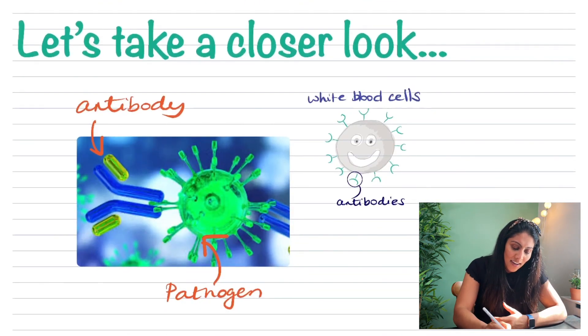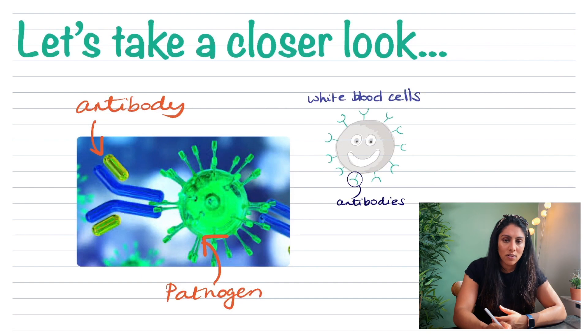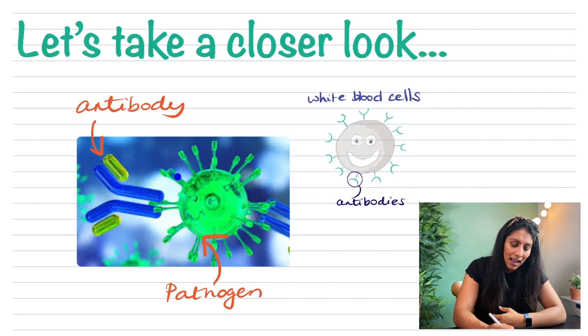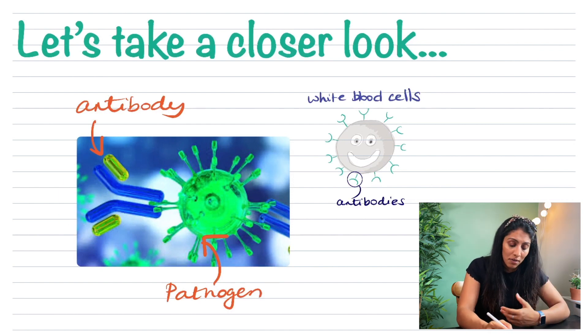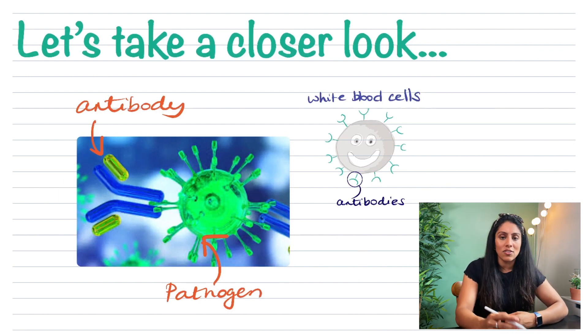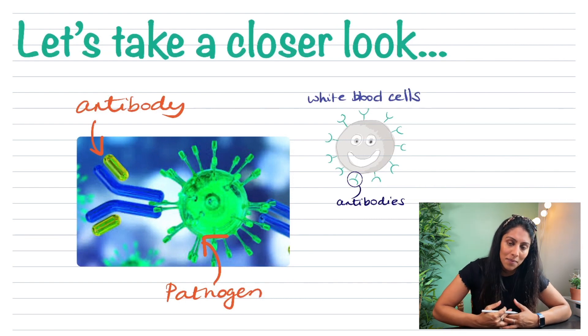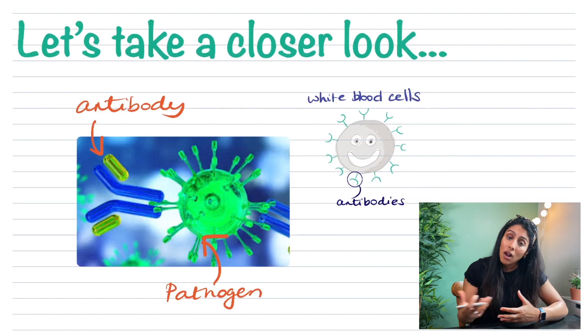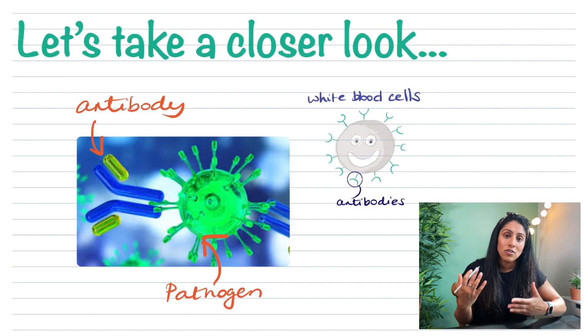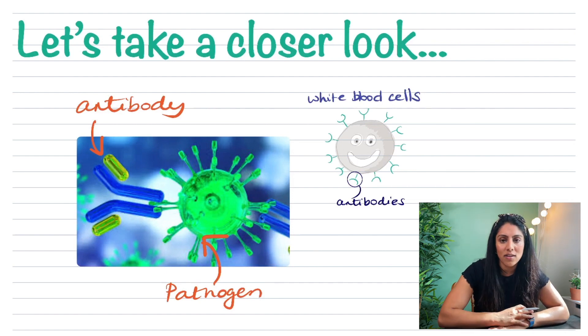Now I've zoomed in and you can see one of my pathogens — remember that's a microorganism that causes disease — and it has antigens around it. The antibodies have bound to these antigens because they have the same specific complementary shape. They do this so that they can call other white blood cells to help destroy the pathogen, digest it, and get rid of it so that it doesn't harm you.